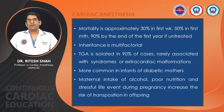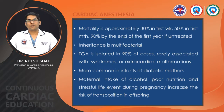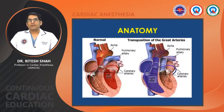TGA is more common in infants of diabetic mothers. Maternal intake of alcohol, poor nutrition, and stressful life events during pregnancy increase the risk of transposition in offspring. You can see a side-by-side figure of a normal heart and a heart with transposition of the great arteries.